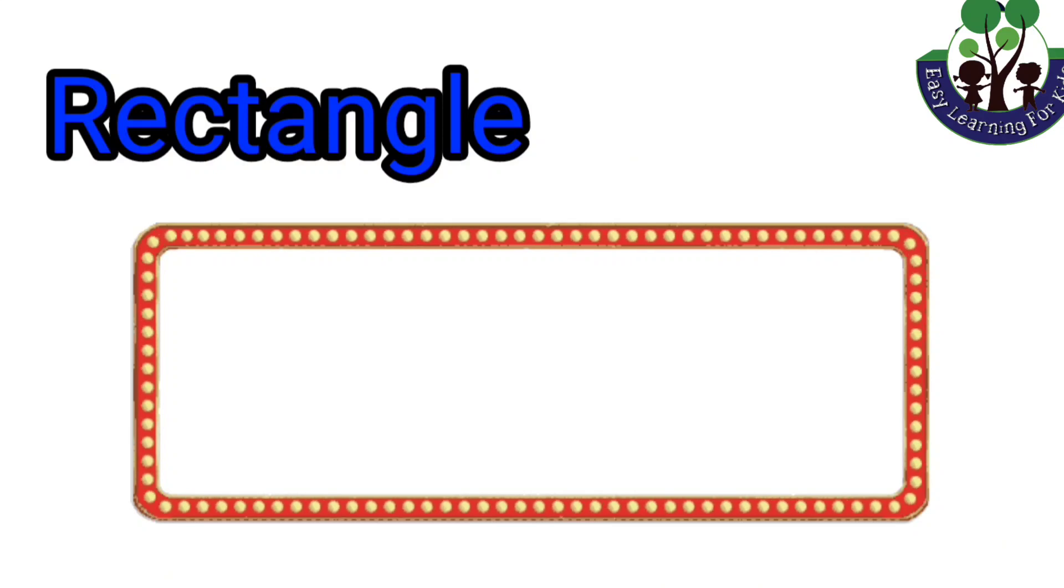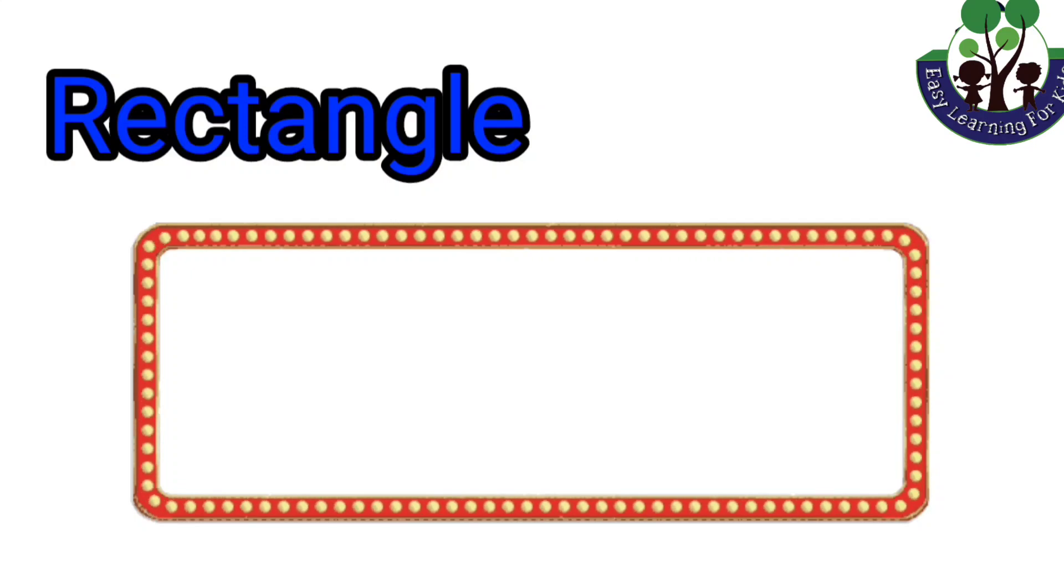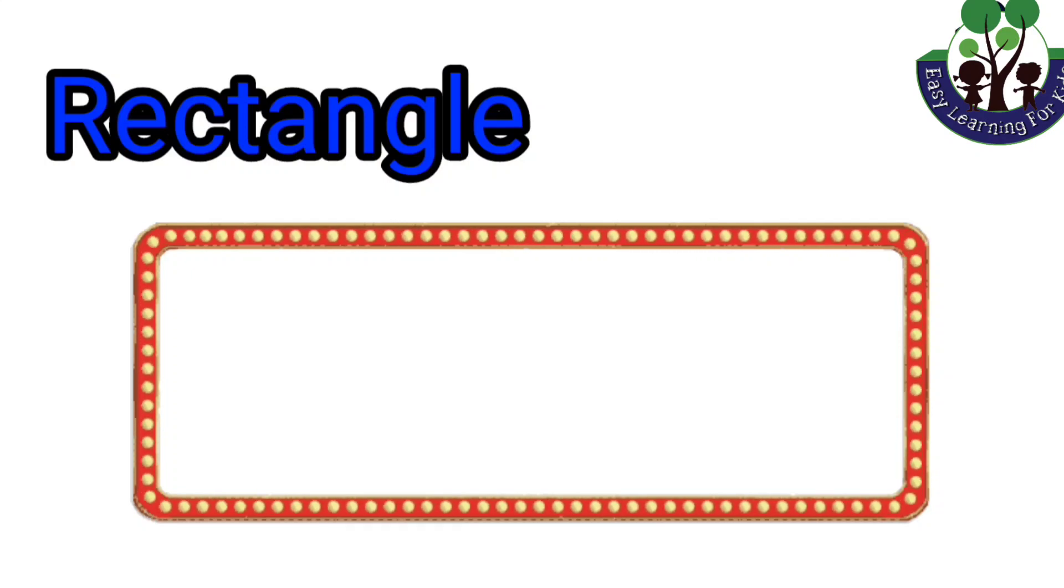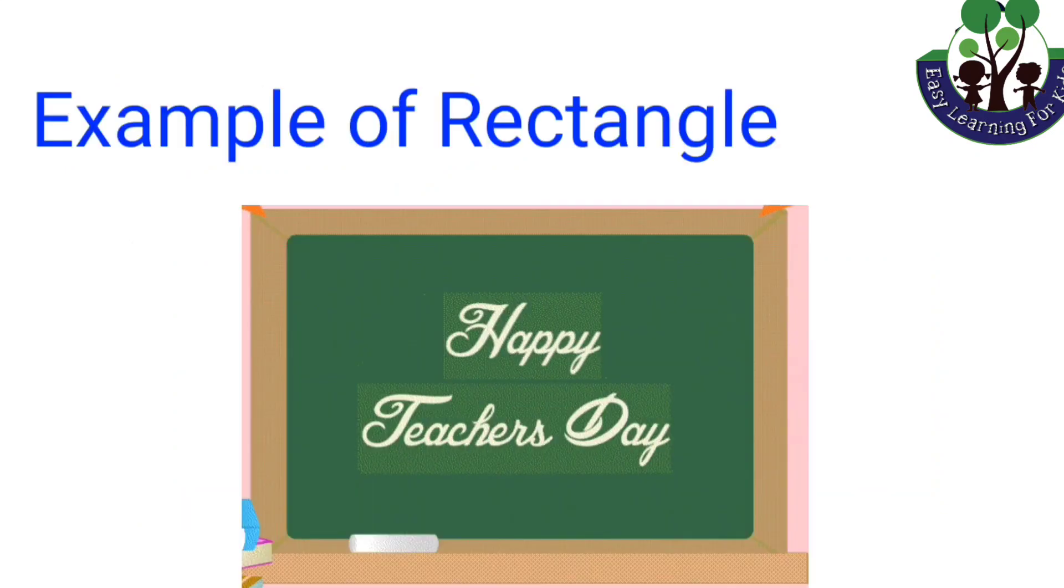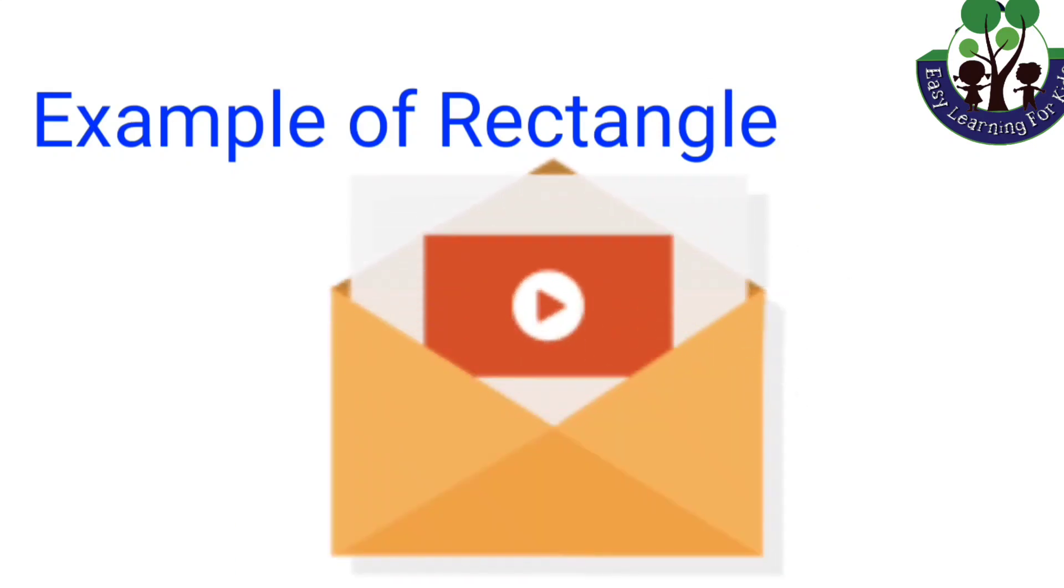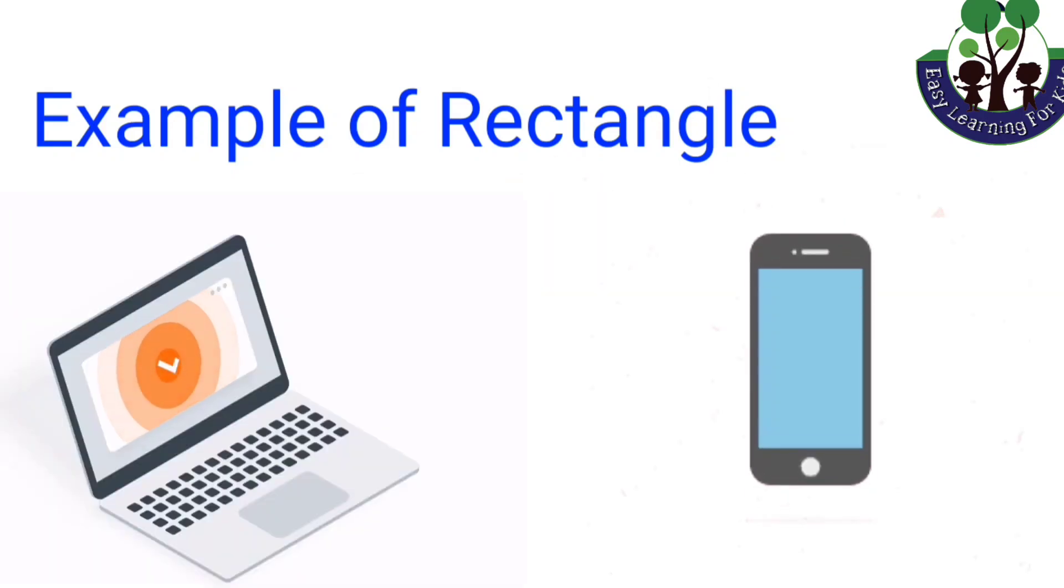Rectangle. A rectangle has four sides. It is a two-dimensional geometric shape in which the length of the opposite sides is equal. For example, blackboard, envelope, laptop screen, and touch screen mobile phone.